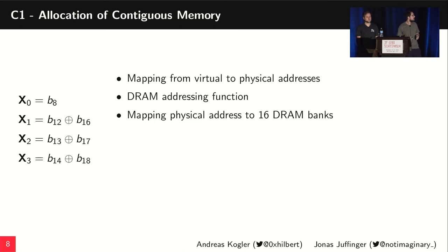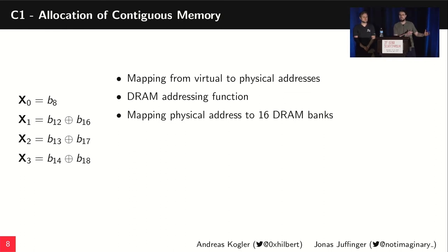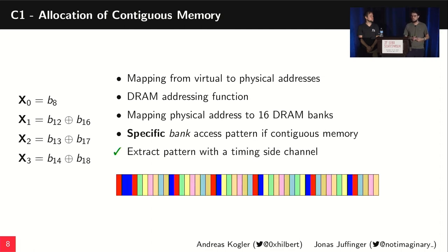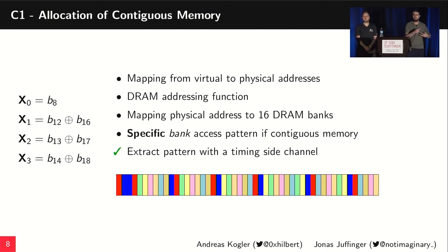For this, we use the DRAM addressing functions you can see on the left. They are used by the memory controller to map physical addresses to the 16 DRAM banks of our device. If the memory is physically contiguous, these functions create a specific pattern in which bank is used for each successive page. Every color on this graph represents a bank — for example, the blue bank has a specific pattern: a directly neighboring bank, then distances of eight, nine, eight, and then the whole thing repeats. We can detect this through a timing side channel using bank conflicts.